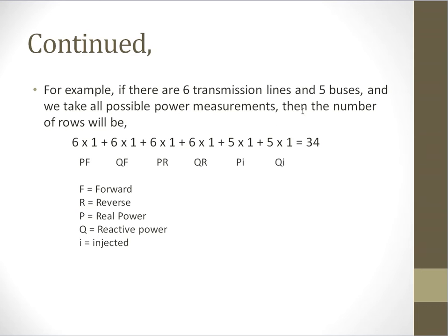For example, if in a five bus system you have six transmission lines and you take all possible power measurements, that means for each transmission line we will have two powers, real and reactive in the forward direction, and two powers in the reverse direction.